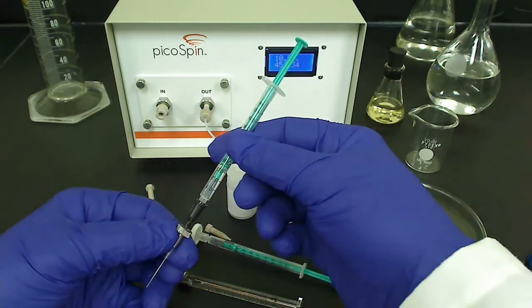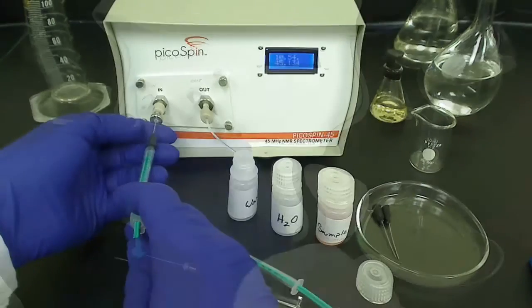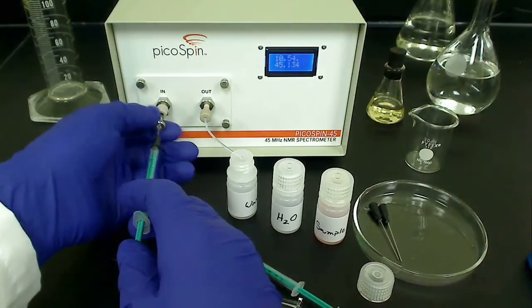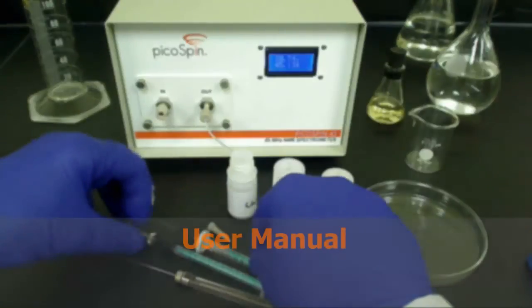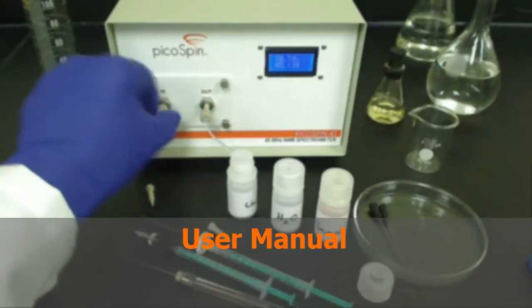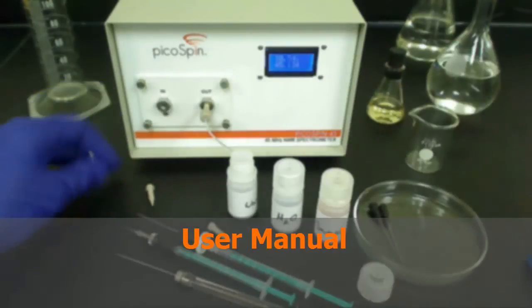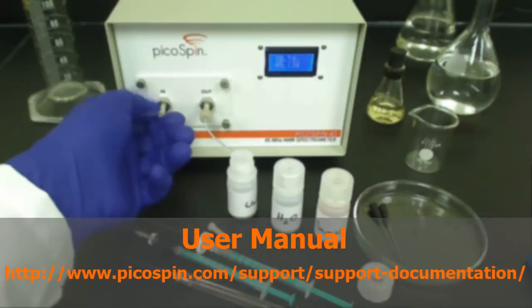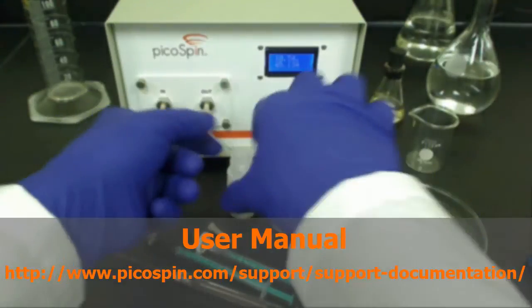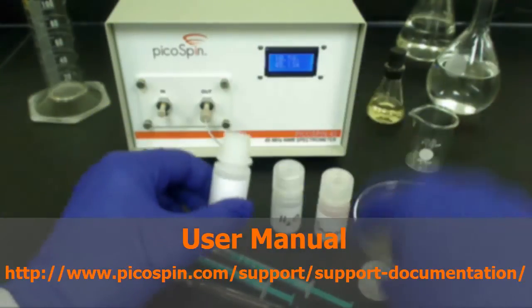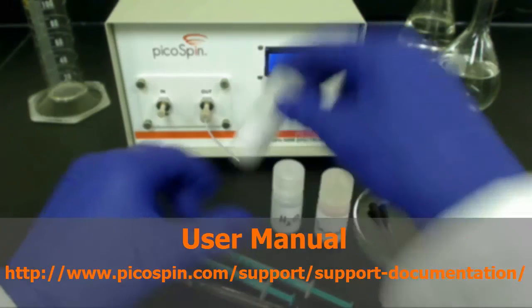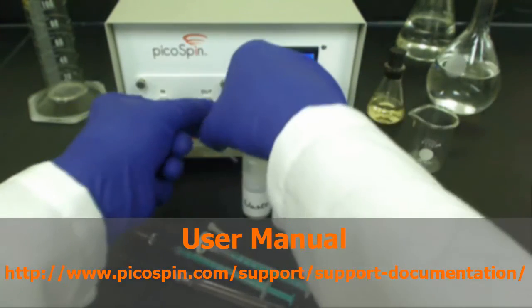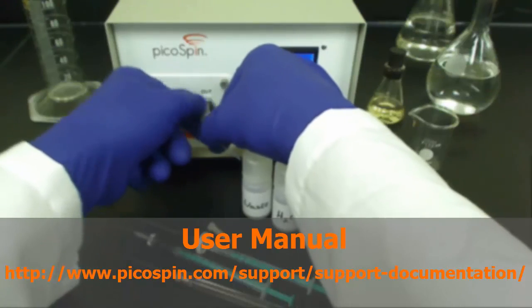In this video, we explored the procedure for sample injection using classroom and laboratory kit accessories. Remember, there is a written description of the information contained in this video in the System Operations section of the PicoSpin 45 User Manual under the heading titled Sample Handling, and in the documentation accompanying the classroom and laboratory accessory kits. These documents are located under the documentation section of the support page of our website at www.picospin.com. Both HTML and PDF versions of the documentation are available.